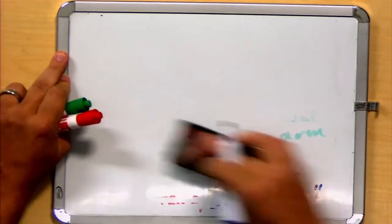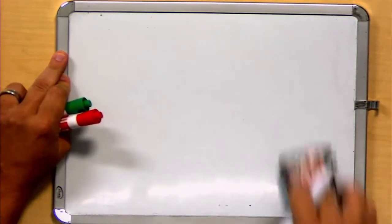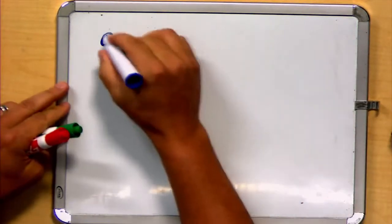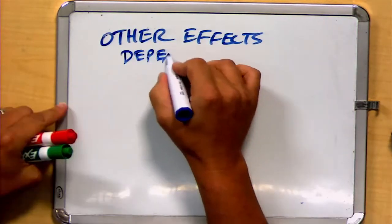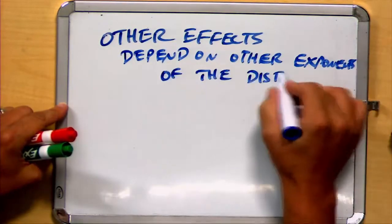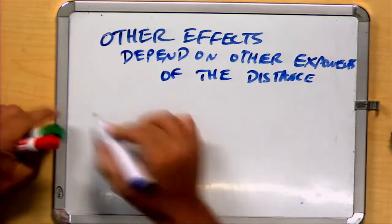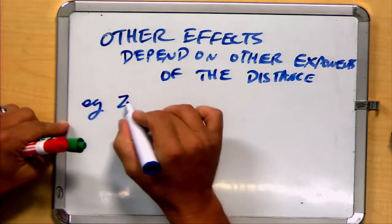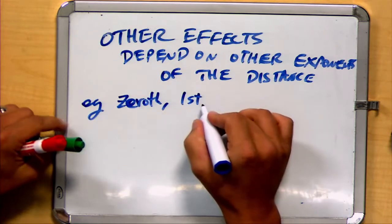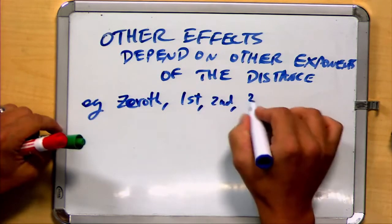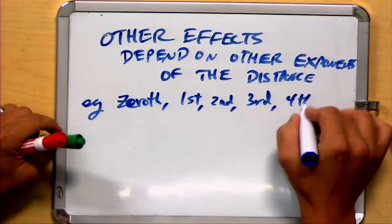It turns out, in physics and in engineering and in other disciplines, including statistics, that other effects might depend on other exponents of the distance. For example, we can have the zeroth moment, the first moment, which we just saw, the second, the third, the fourth, and so on.